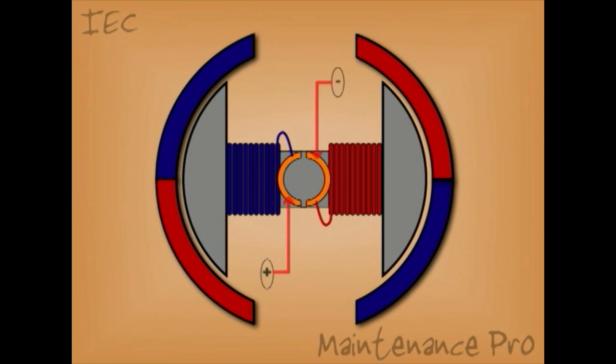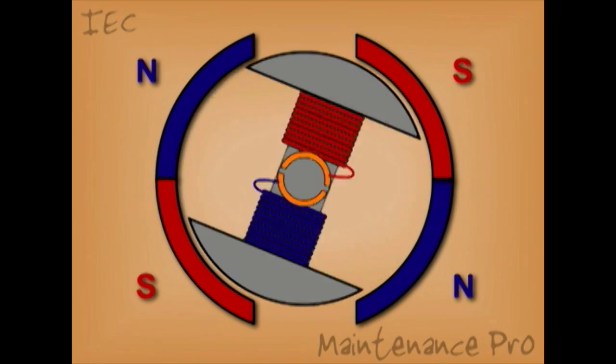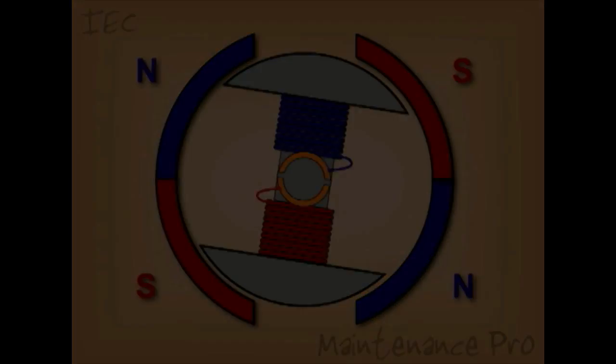One, electric current creates a magnetic field. Two, opposite magnetic poles attract and like magnetic poles repel each other. And three, current direction determines the magnetic poles.